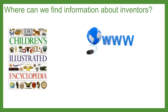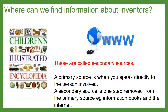Where can we find information about inventors? There are two clues on the screen: one is an encyclopedia and one is www — which should give you a clue. We call these types of sources secondary sources. Linking back to our history learning, a primary source is something from the time, or when you speak to someone directly involved. A secondary source is one step back from the primary — so information books and the internet, though you do need to check their reliability.